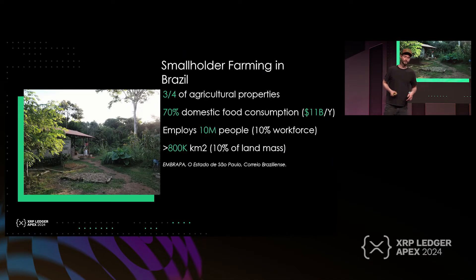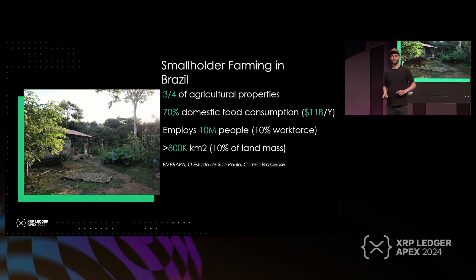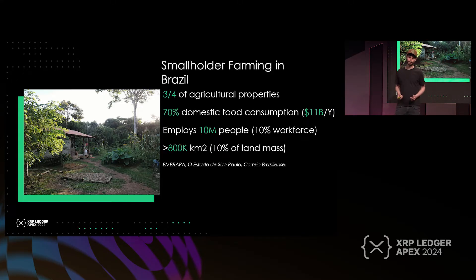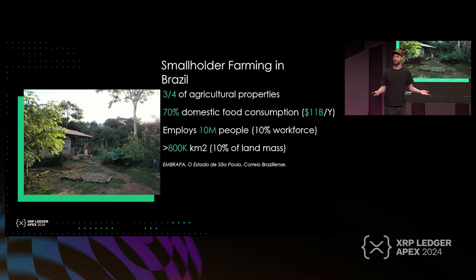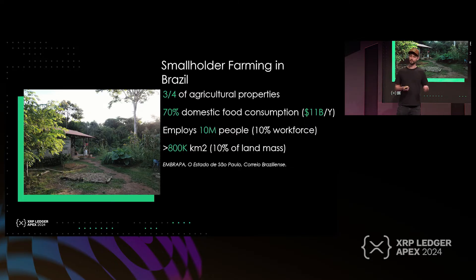Because unlike the big monoculture businesses that plant soybeans for miles on end — spoiler alert, not very sustainable — smallholder farmers are more likely to adopt innovative methods like agroforestry, or have biodiverse inputs in what they're planting. And when you look at the bigger picture throughout Brazil, it's actually a compelling market. About 77% of agricultural properties are smallholder or family farms.